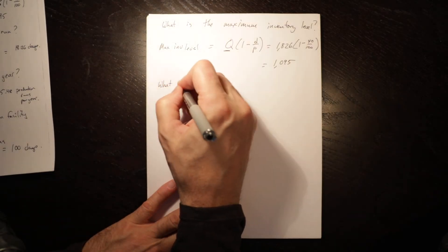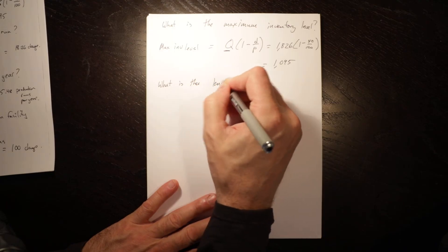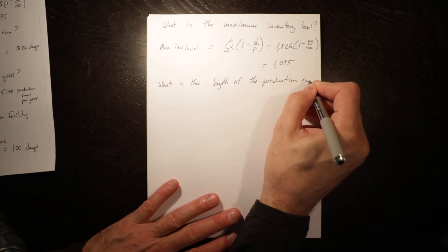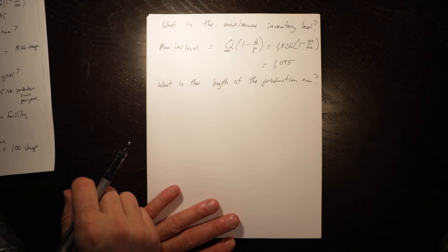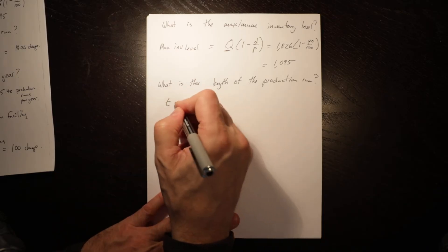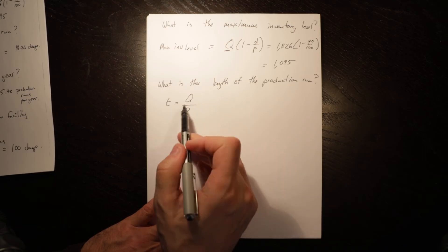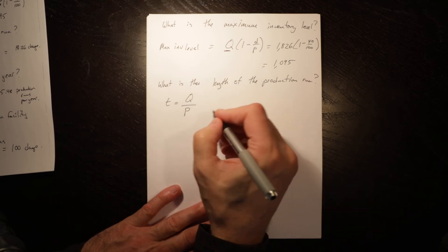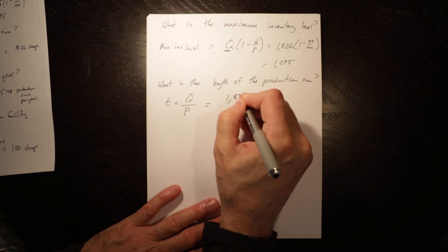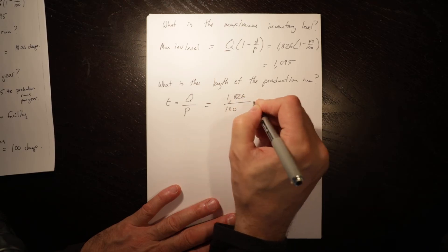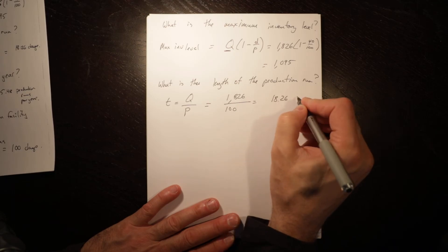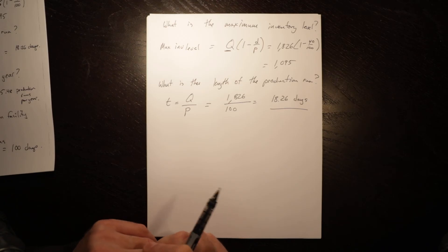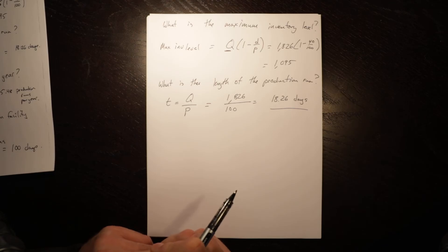So next question is what is the length of the production run? So how long does it take us to make 1826 units? So that is T is equal to Q over P. Q is how much we produce, this is how much we produce per day. So that is equal to 1826 divided by 100 is 18.26 days. So when we run, when we do an order, the production facility runs for 18 and a quarter days to get that order done.